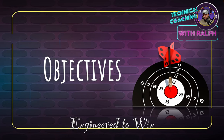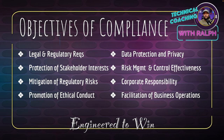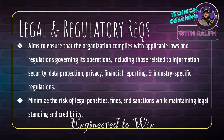The objectives of compliance start with legal and regulatory requirements. It aims to ensure the organization complies with applicable laws and regulations governing its operations, including those related to information security, data protection, privacy, financial reporting, and specific regulations. Most importantly, it minimizes the risk of legal penalties, fines, and sanctions while maintaining legal standing and credibility.